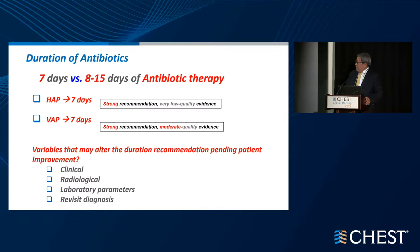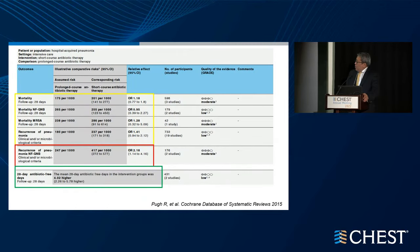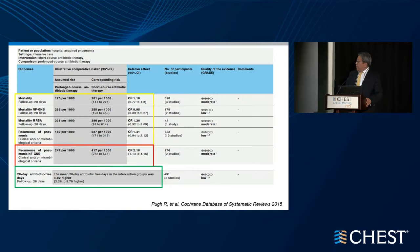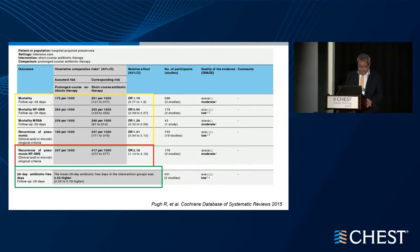If patients are not improving clinically or radiographically, it is recommended to revisit the diagnosis and consider alternative antibiotics or an alternative pulmonary diagnosis. A meta-analysis showed that short-course antibiotic therapy was not better than a longer course based on mortality for all organisms — gram-negatives or MRSA — though there was a noted increase in recurrence of gram-negative organisms with the shorter course. Given the risk-benefit, the committee recommended considering the shorter course, which resulted in significantly higher mean 28-day antibiotic-free days.